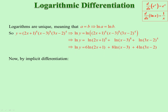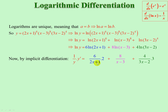We can even go further by taking the powers 6, 8, and 4 down to the front. Now look how easy that is to differentiate. Differentiating the left-hand side: ln of y differentiates to 1 over y times the derivative of the inside. So there we are: 1 over y for the derivative of ln, and y prime for the derivative of the inside function y. For the right-hand side: 6 over 2x plus 1, times 2 — derivative of the inside.